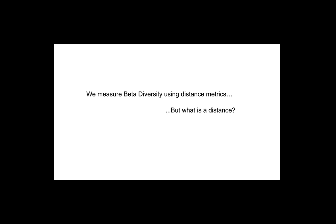As we move in to talk specifically about beta diversity, what we're looking at is a comparison between two samples — how do the microbes in those samples overlap. We do this by plotting the beta diversity in distance metrics. When I'm talking about distance, what I mean is how similar or different two samples are from each other: do they share many of the same microorganisms or do they not overlap at all? We're going to get into how we measure this in a second, but first I just want to show you how this data is going to look.